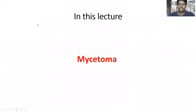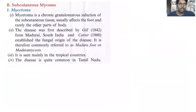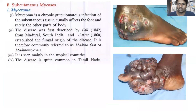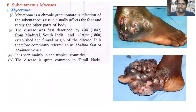In this lecture, I am going to discuss about Mycetoma. Mycetoma is a chronic granulomatous infection which occurs in subcutaneous tissues. Usually it will infect the foot, and it also rarely goes to other parts of the body. These are the images of Mycetoma — they form nodules and these nodules start secreting pus.